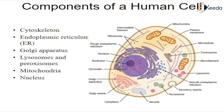Nucleus. The nucleus serves as the cell's command center, sending direction to the cell to grow, mature, divide, or die. It also houses DNA — deoxyribonucleic acid — the cell's hereditary material. The nucleus is surrounded by a membrane called the nuclear envelope, which protects the DNA and separates the nucleus from the rest of the cell.